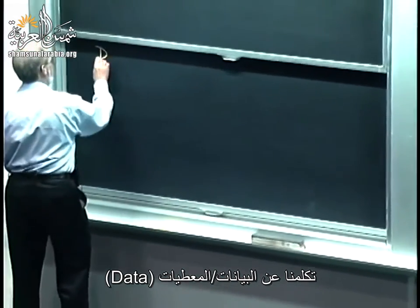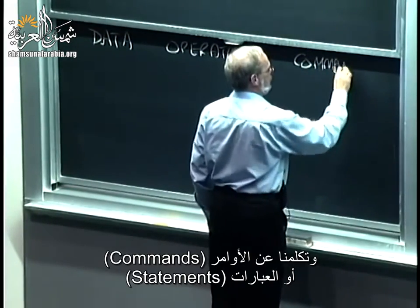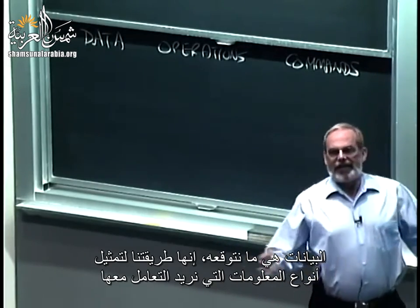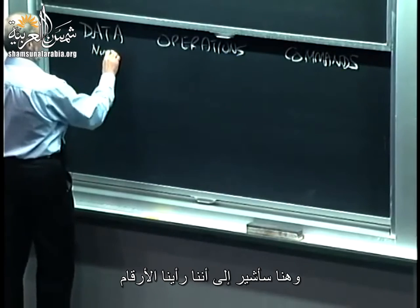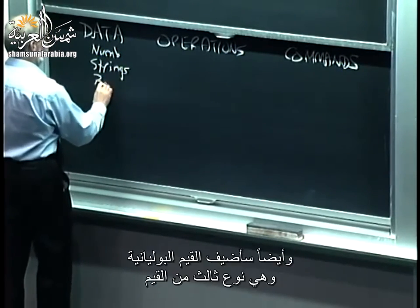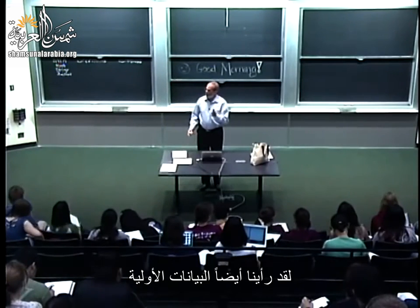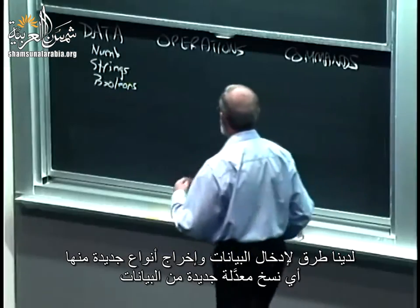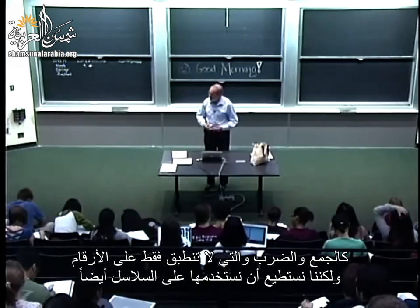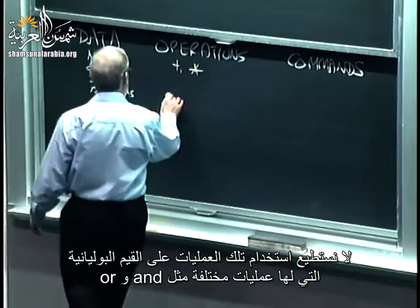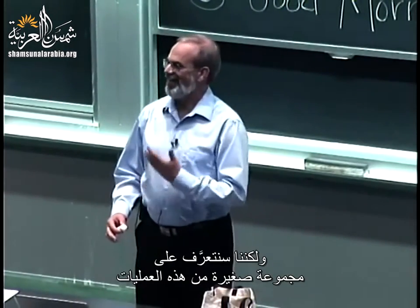We've talked about data, operations, and commands or statements. Data is our way of representing fundamentally the kinds of information we want to move around. We've seen numbers, strings, and Booleans — a third kind of value we saw when we started talking about conditionals. Associated with that primitive data, we have ways of taking data in and creating new kinds of data out. So we have operations — things like addition and multiplication, which apply not only to numbers but also to strings. Booleans have a different set, things like AND and OR.